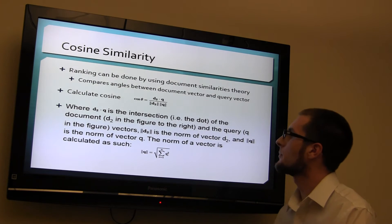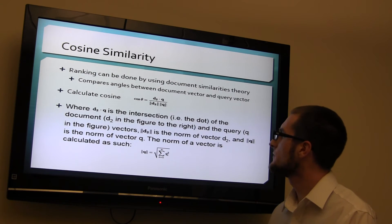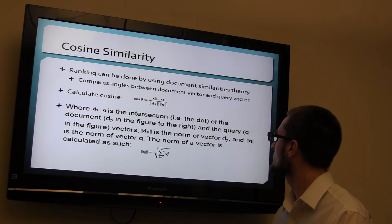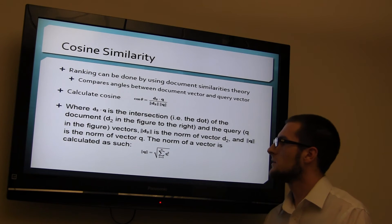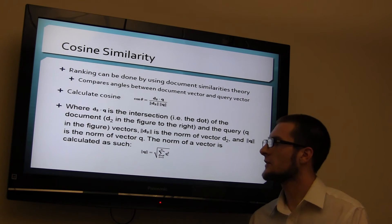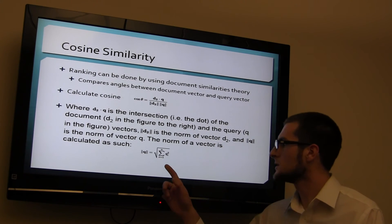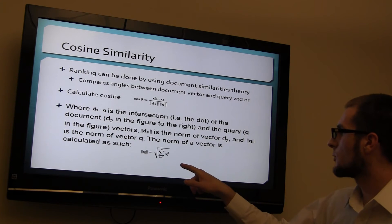The dot product of the document D2 in the figure to the right and the query Q is the figure vectors. The norm of vector is calculated as such. So the sum of all queries.